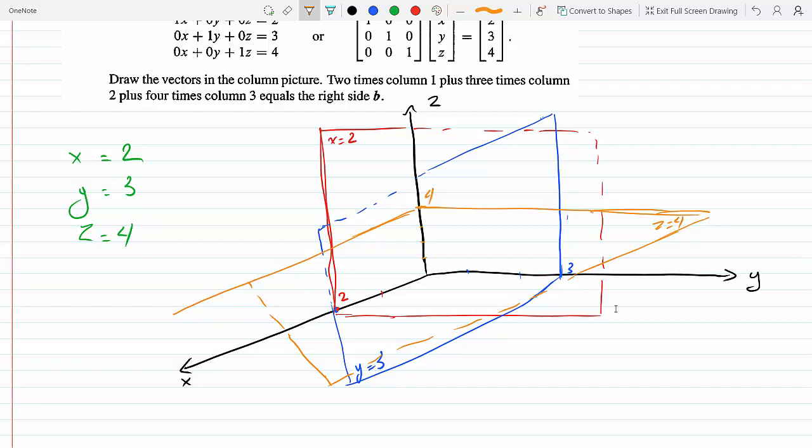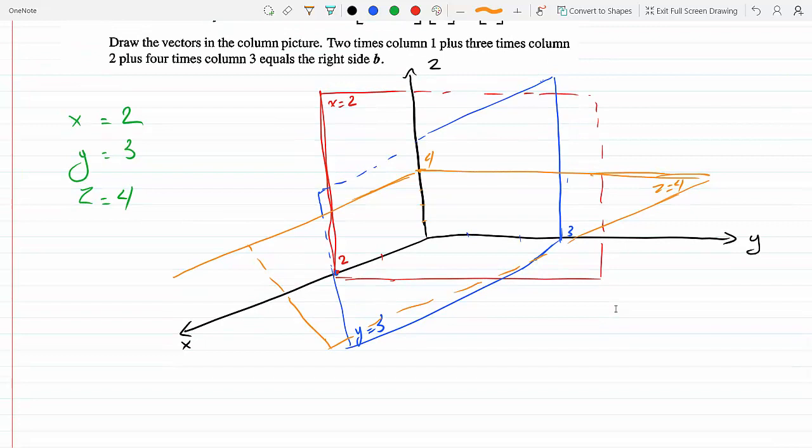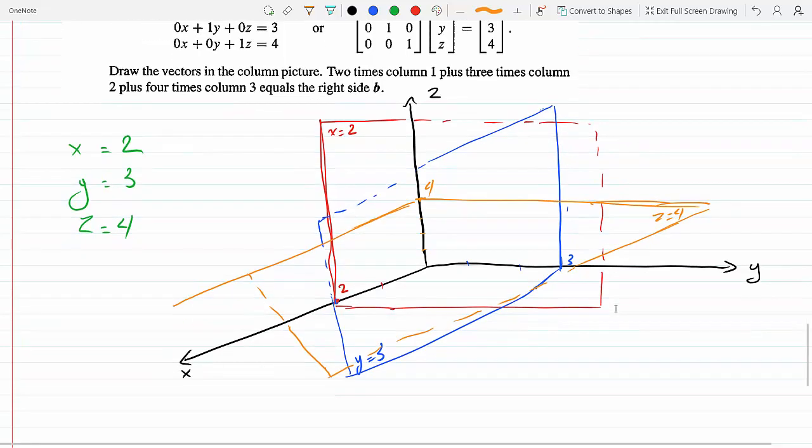If we want to make this more concrete, these do intersect. They all intersect at the point (2, 3, 4), because that's where these planes meet. Just as it says, the three sides of the box meet at (2, 3, 4). They all meet here somewhere, at (2, 3, 4).